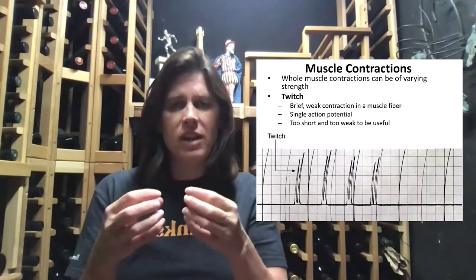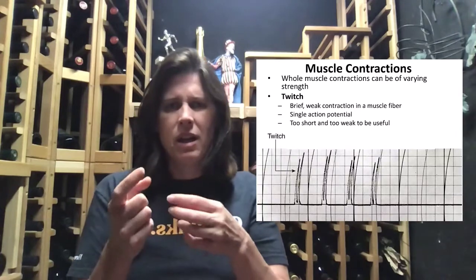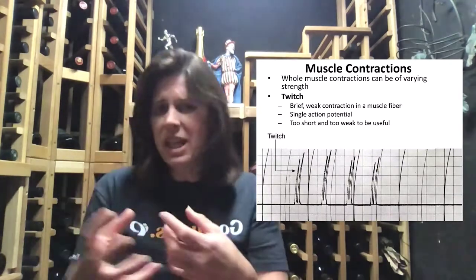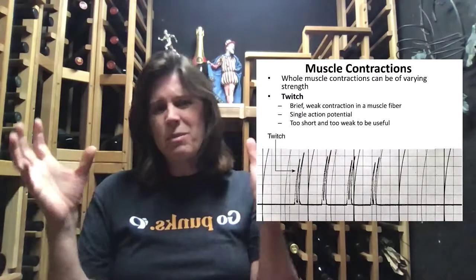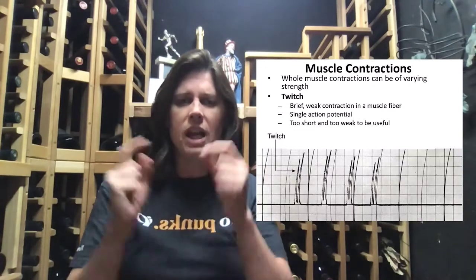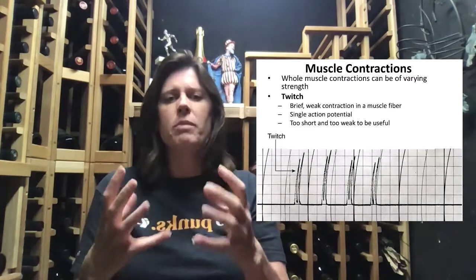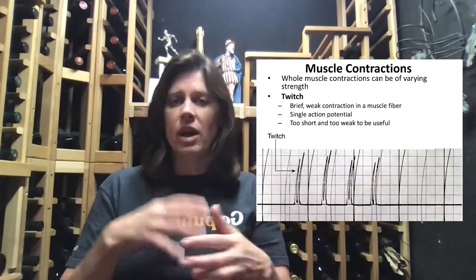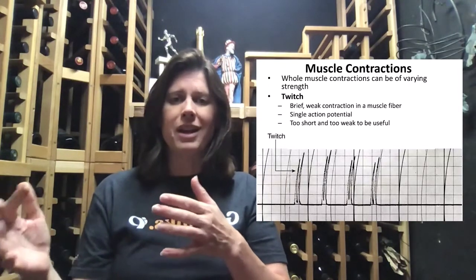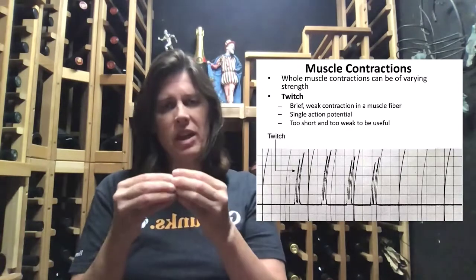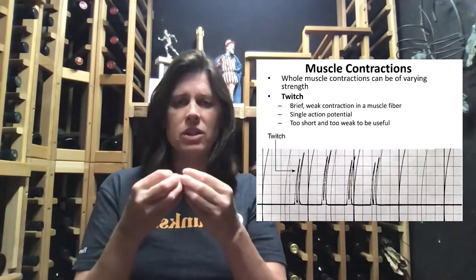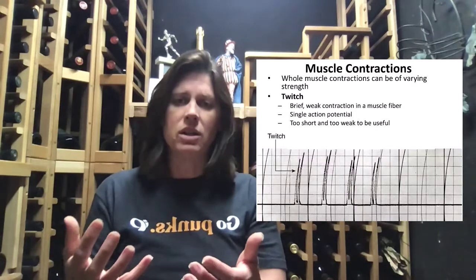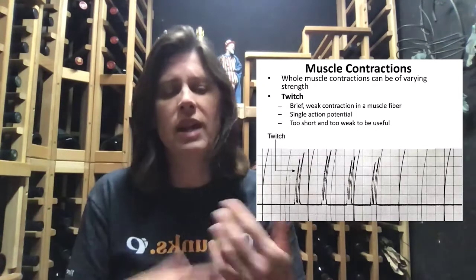A whole muscle consists of hundreds to thousands of cells depending on which muscle we're talking about. If we contract a small subset, it will be a weak contraction. If we stimulate a larger subset to contract, it will be a much stronger contraction, and so on. That's how we vary the strength.